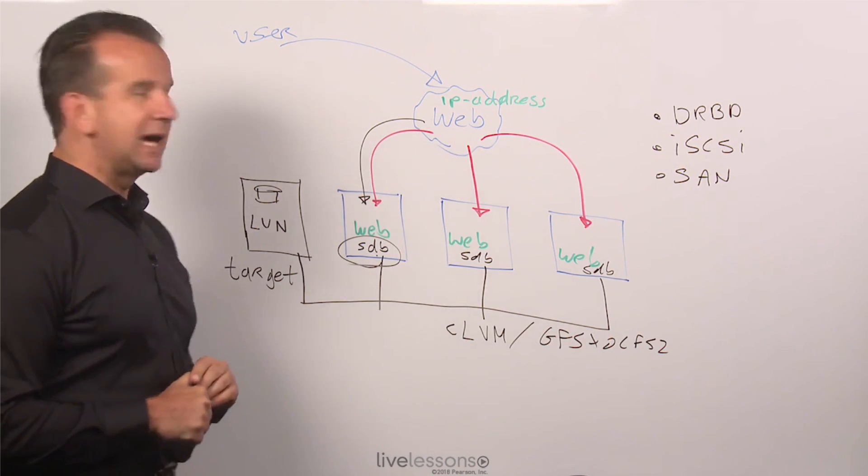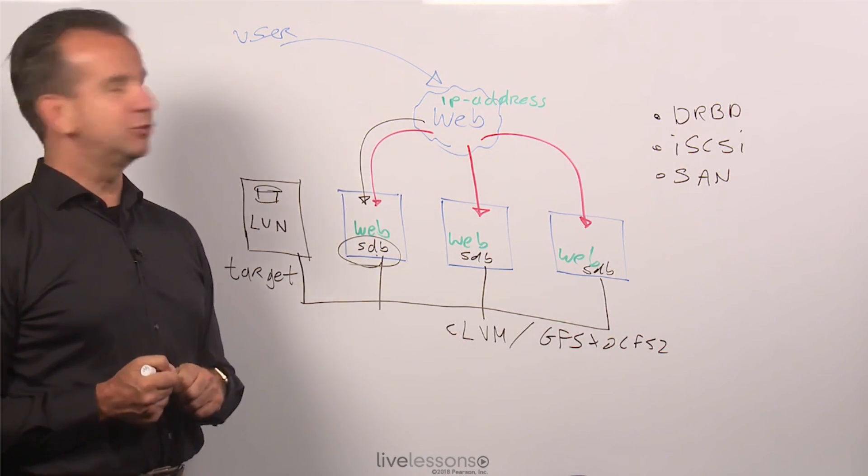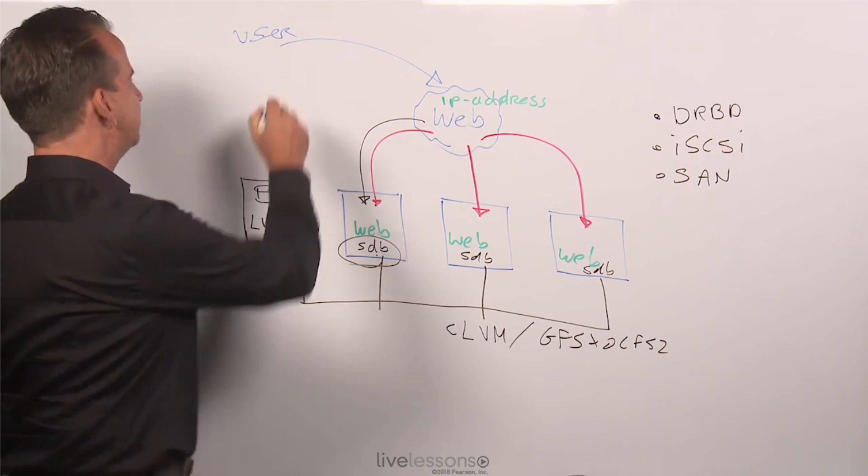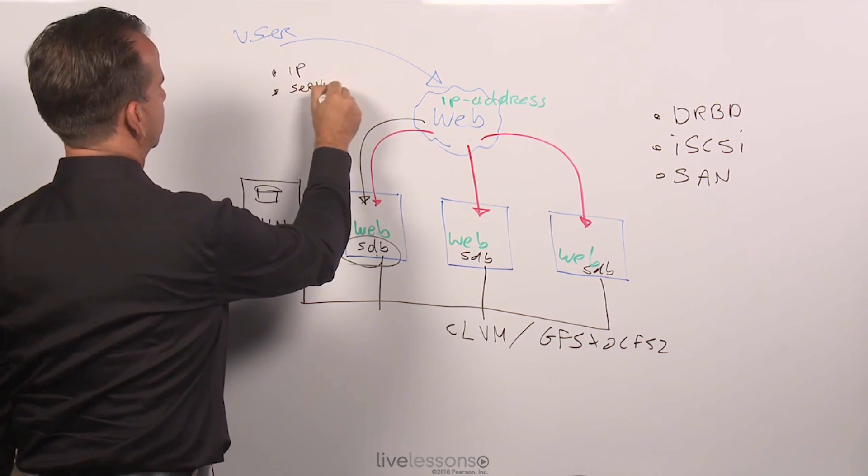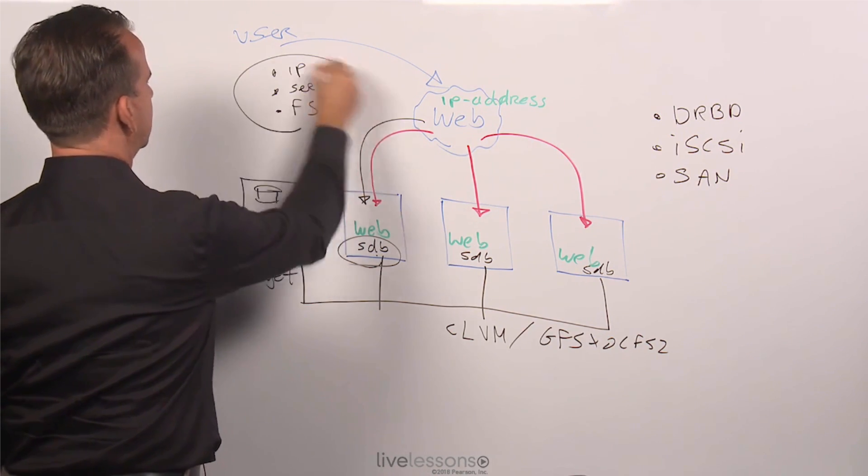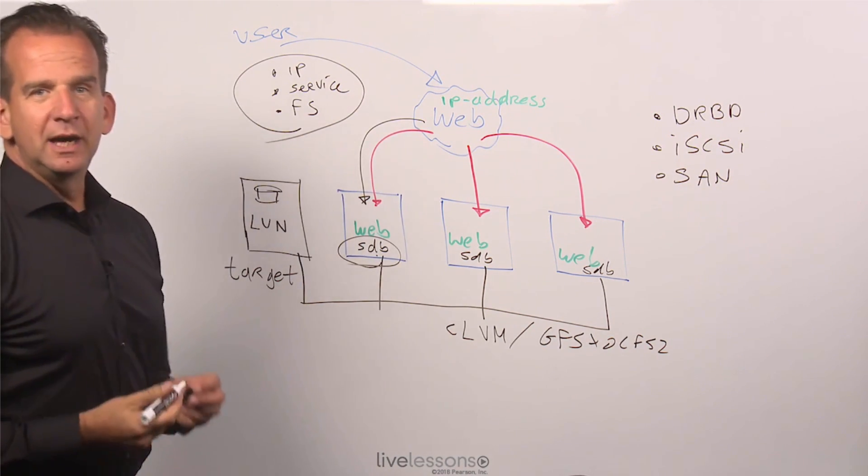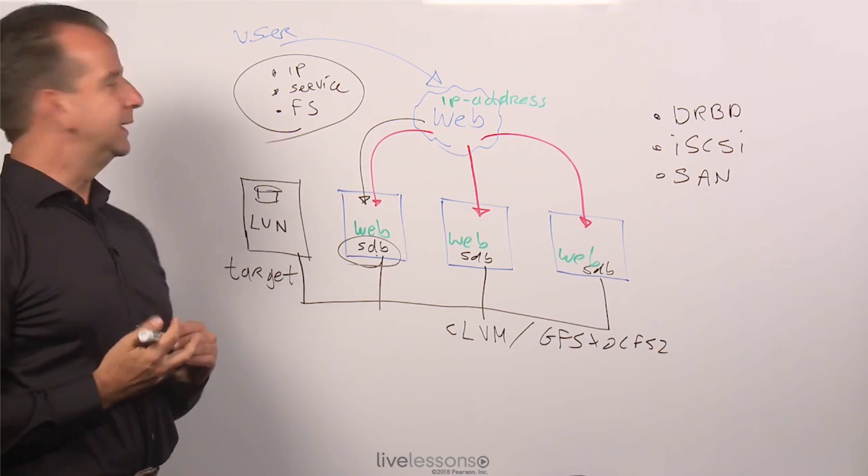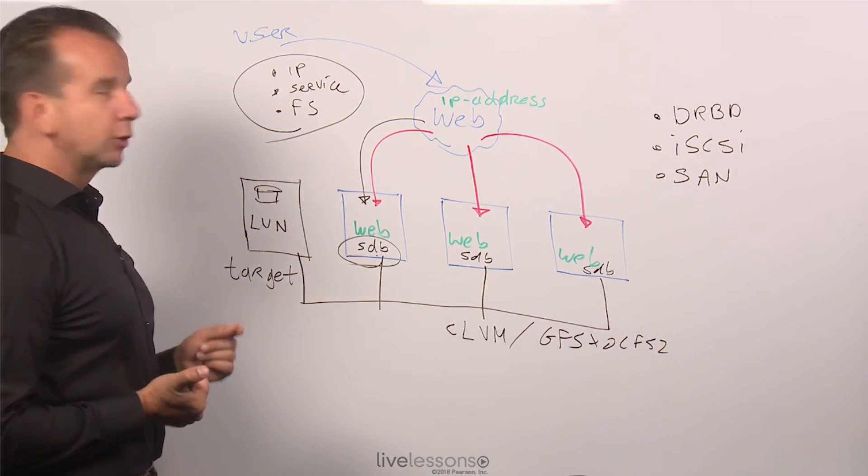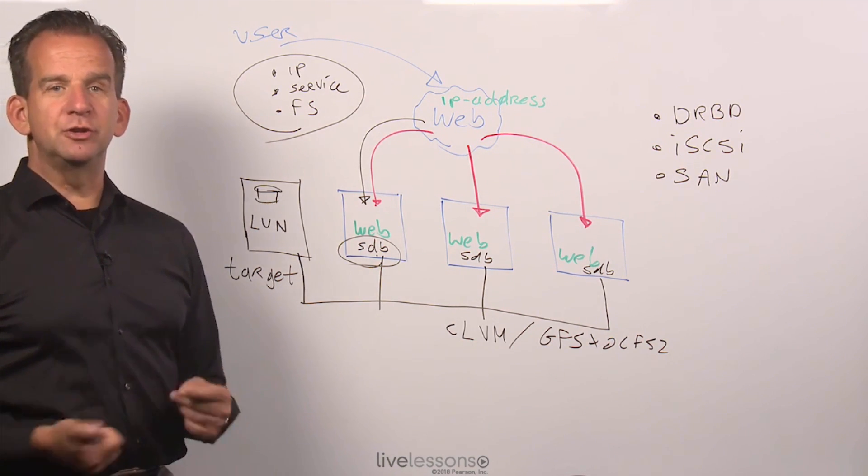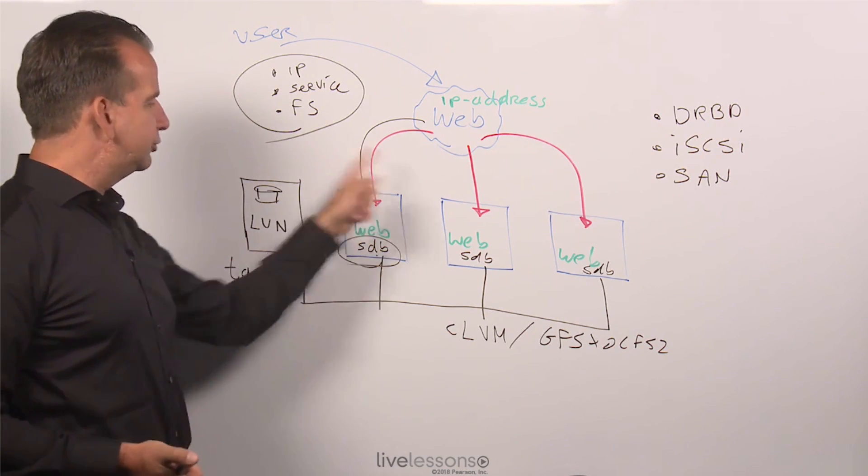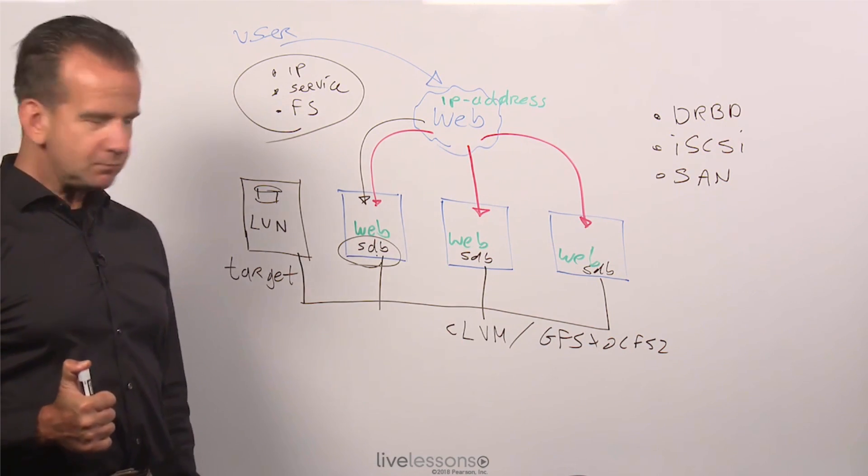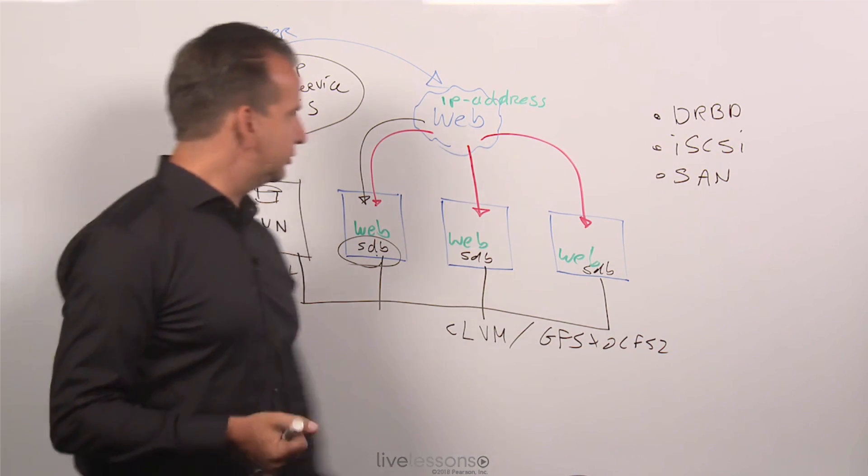At this point we have talked about the ingredients that are needed to create a high-availability web server: an IP address, a service, and a file system. And all of them are going to be offered through a resource group in the cluster. So, the cluster is not going to manage just the web server process, it is going to manage the resource group and make sure it runs somewhere in the cluster.